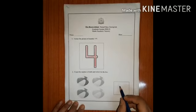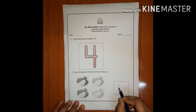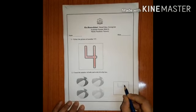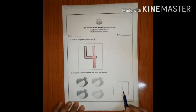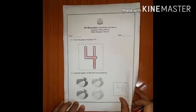How will you write number 4? Standing line, slipping line, again a standing line. This is how you write number 4. Now, let's move on to the second sheet.